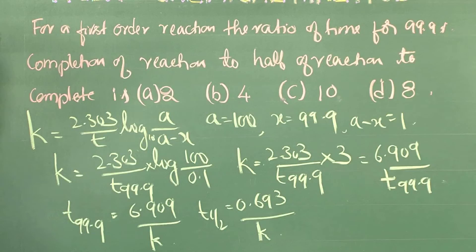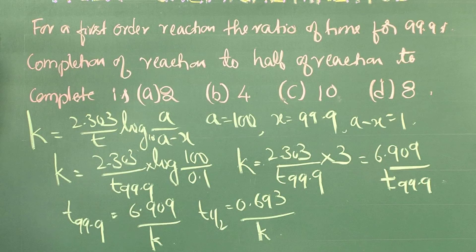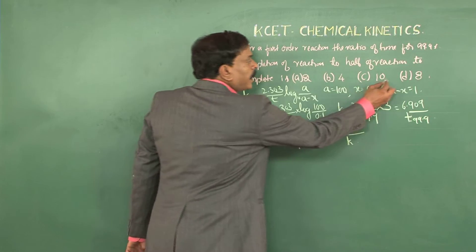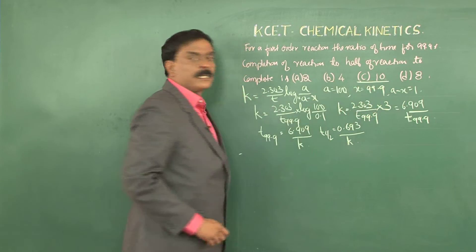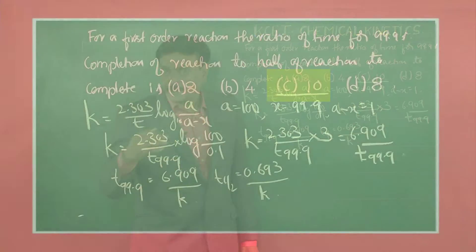When we compare these two expressions, we find that T₉₉.₉% is 10 times T½. Therefore, the answer is C, that is 10.